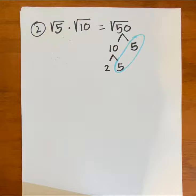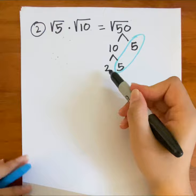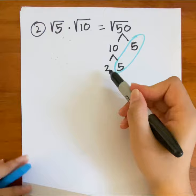Here we go, we have a pair. And remember, when you have a pair, they go outside, and when you do not have a pair, it stays inside the house. So we're going to have 5 radical 2 as our answer.